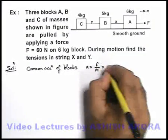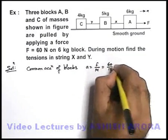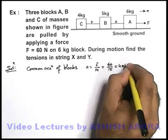F by total mass, this will be equal to 60 divided by 15, that is 4 meters per second square.